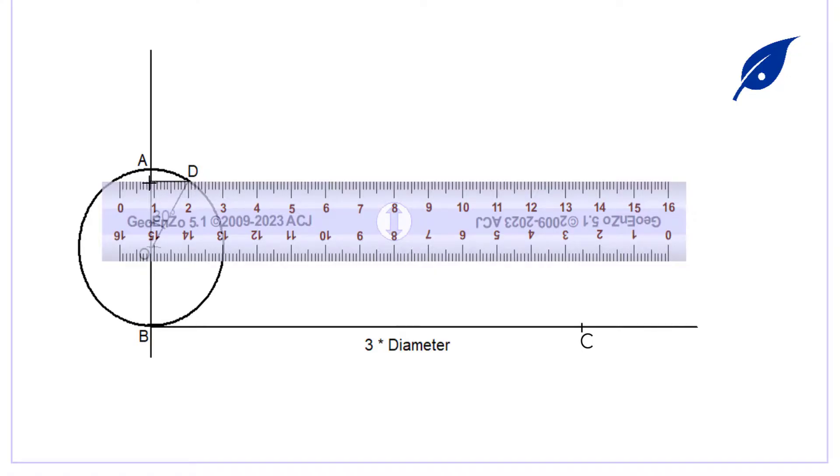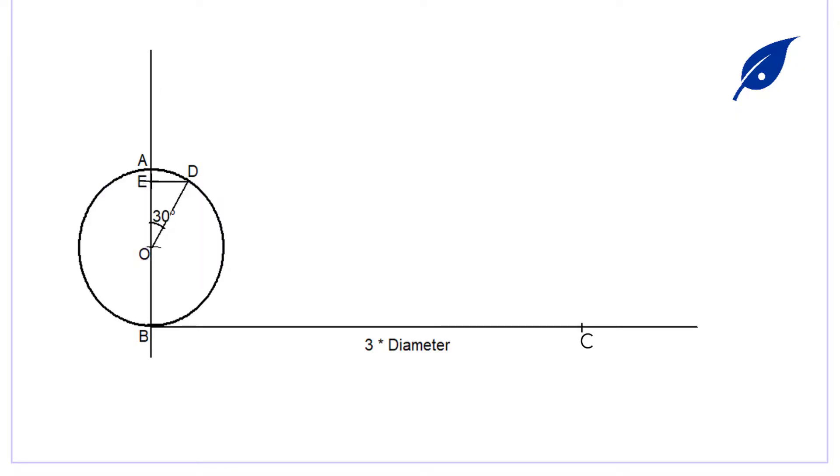We'll connect from point E to point C. Now the line that is connected from C to E, that's line EC, is going to be our circumference.